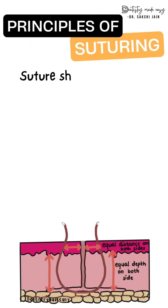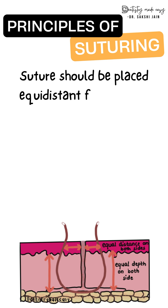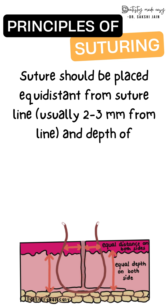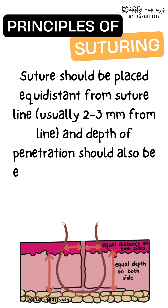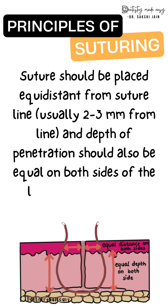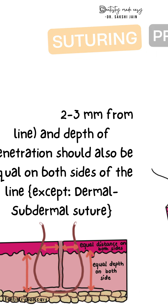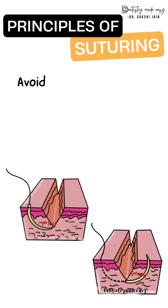The next principle is that sutures should be placed equidistant from the incision or the suture line — approximately two to three millimeters from the line — and the depth of penetration should also be equal on both sides.